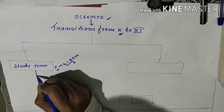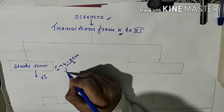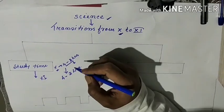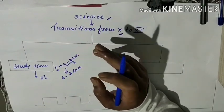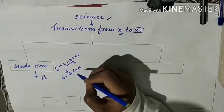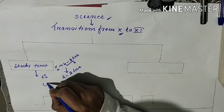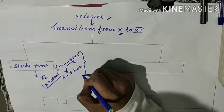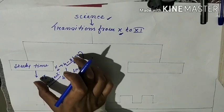In class 10, a good student studies on average 4 to 8 hours. This is excluding school time as well as tuition time, coaching time. This is only the study time at home. Now when you move from class 10 to class 11, this time is not going to change.